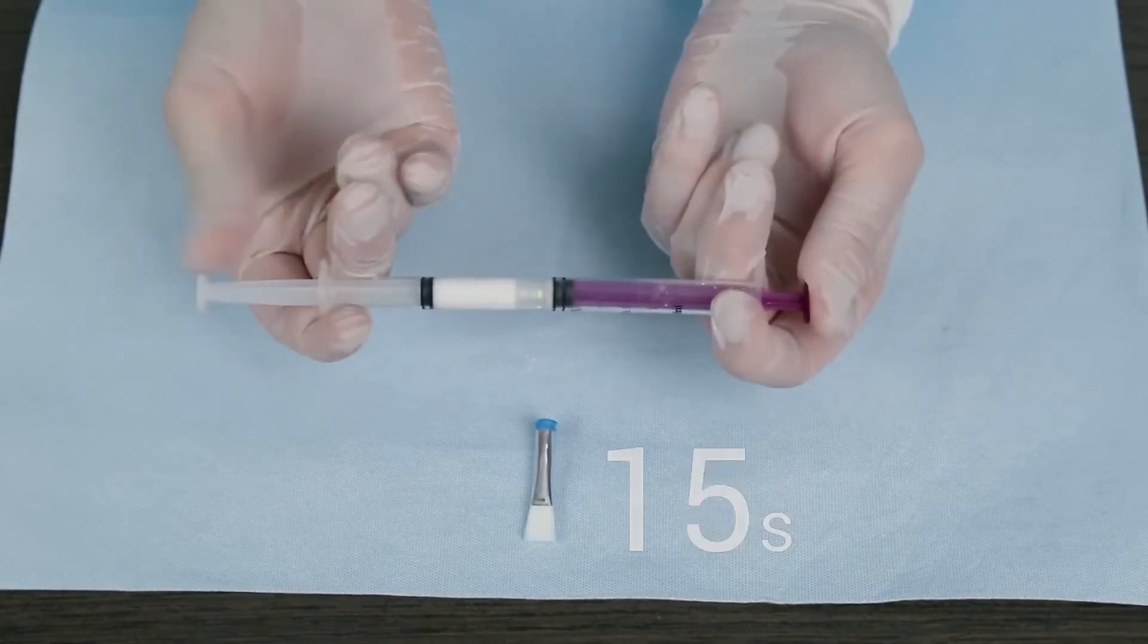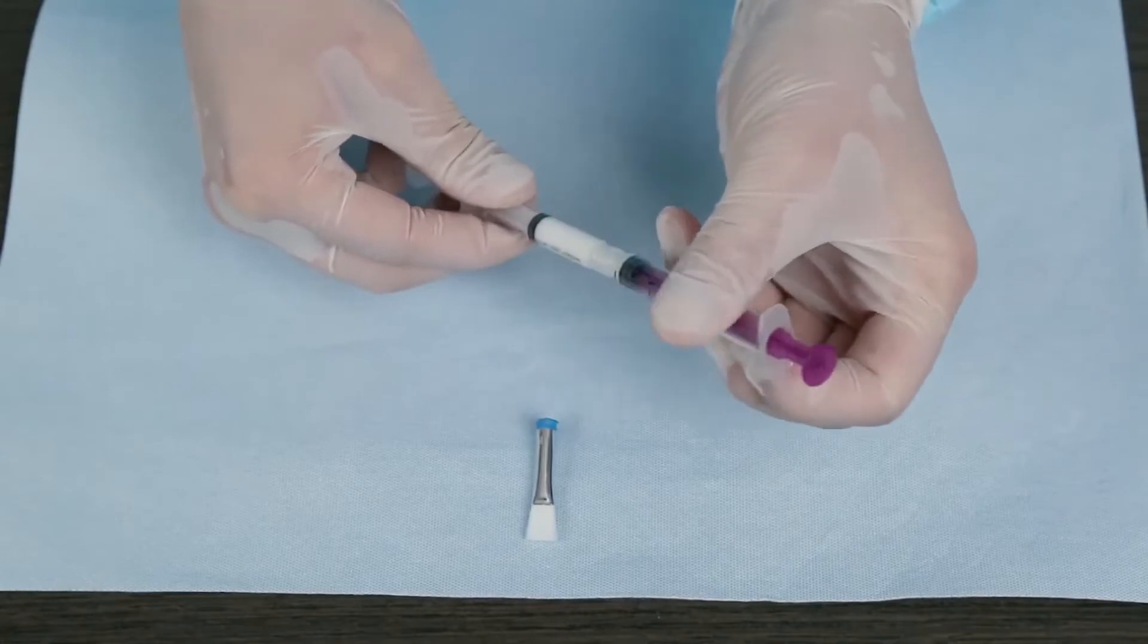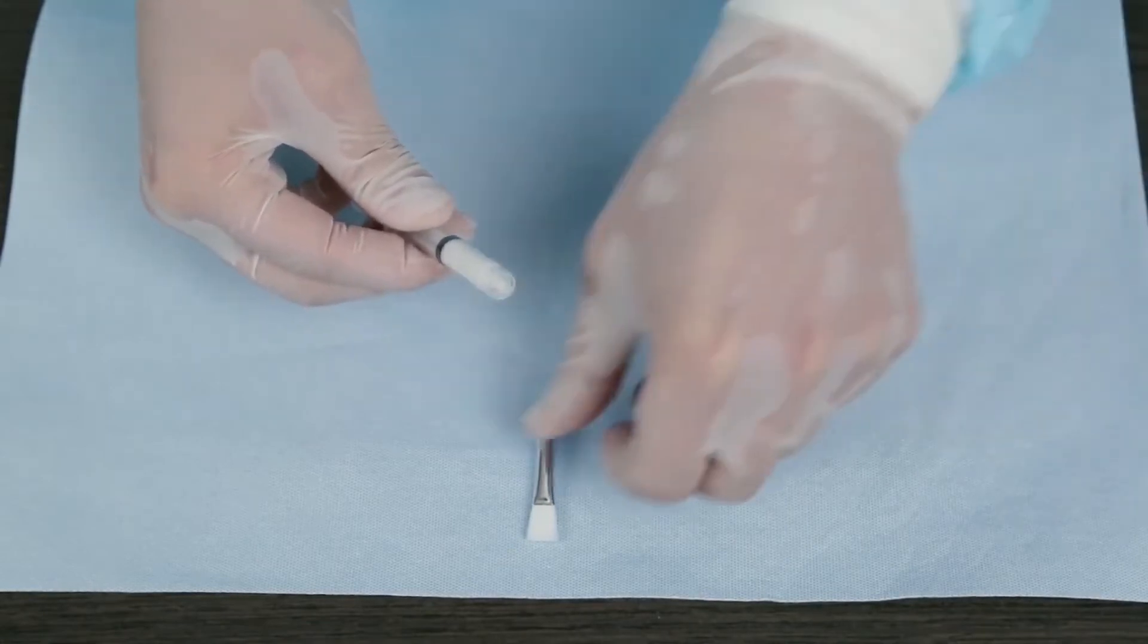Once mixed, push all the liquid into the larger male syringe. Disconnect the two syringes and attach the sterile application brush tip.